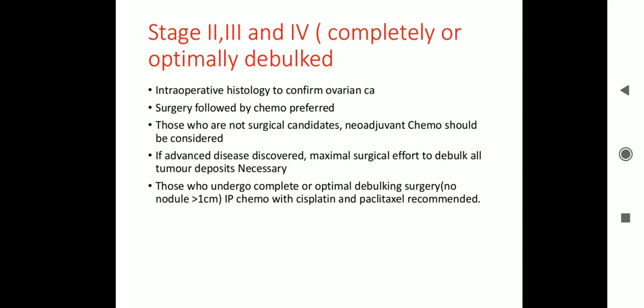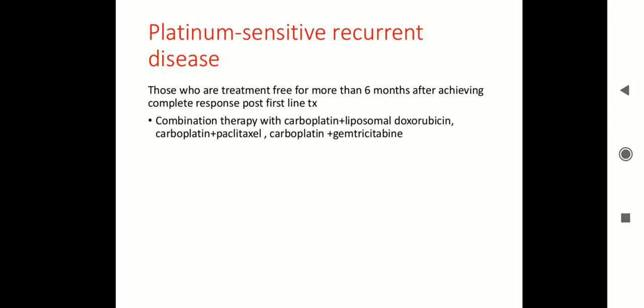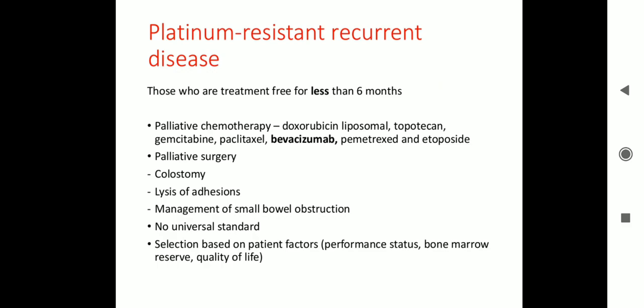For stage 2, 3, and 4: completely or optimally debulked patients should have surgery followed by chemotherapy. Intraoperative histology confirms ovarian CA. Those who are not surgical candidates should receive neoadjuvant chemotherapy. For advanced disease, maximal surgical effort to debulk all tumour deposits is necessary. Platinum-sensitive recurrent disease — treatment-free for more than 6 months after achieving complete response — is treated with combination therapy: carboplatin with liposomal doxorubicin, carboplatin with paclitaxel, or carboplatin with gemcitabine. Platinum-resistant recurrent disease applies to those treatment-free for less than 6 months.